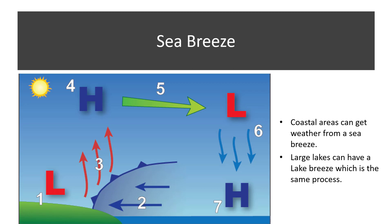When enough moisture is present, clouds will form over land. Showers and thunderstorms can also form along a sea breeze boundary. The rising air eventually stabilizes and moves back over the ocean, at number 5, where it sinks because it is now cooler than the air near the water, at number 6. Large lakes can have a lake breeze, which is the same process.